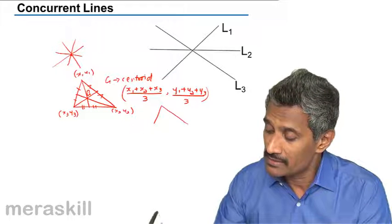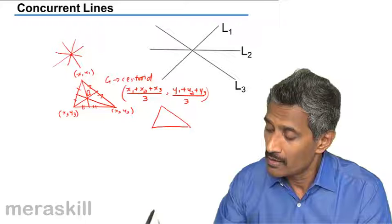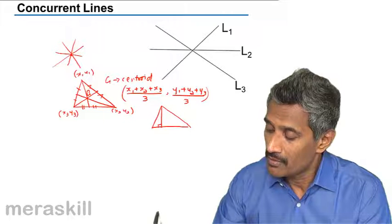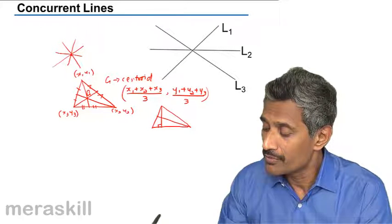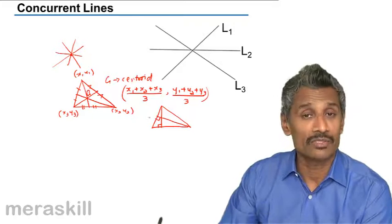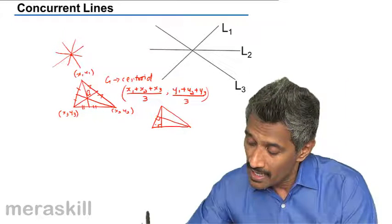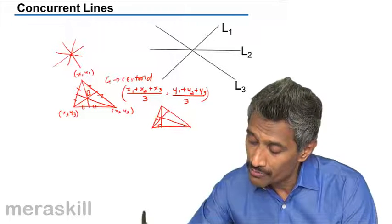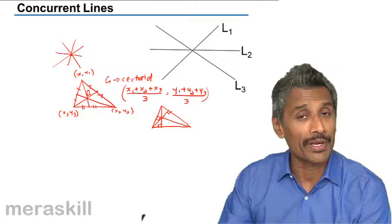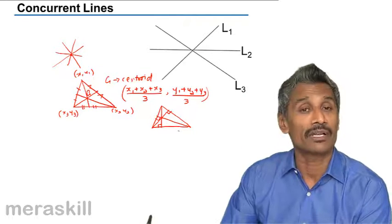Three perpendiculars to the three sides from the opposite vertex, and the third altitude will also pass through the same point. So we say the altitudes of a triangle are also concurrent, and we call this the orthocenter.